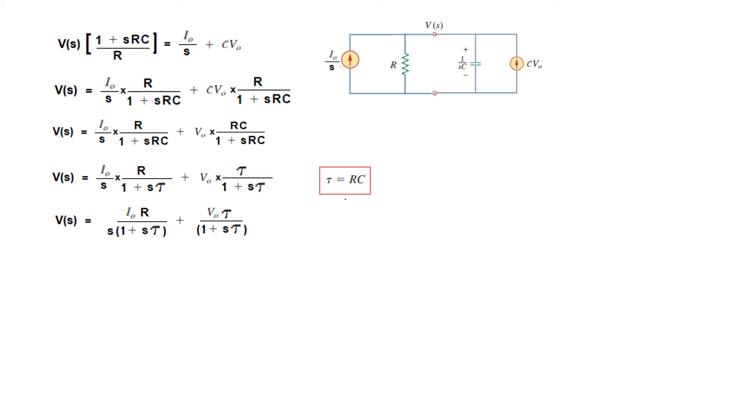So V(s) equals I0R/s(1 plus s tau) plus V0/(1 plus s tau). An interesting point to note is that the first term has two terms in the denominator, so we will have to use partial fraction to break this further. To get the correct format, we divide by tau both numerator and denominator.